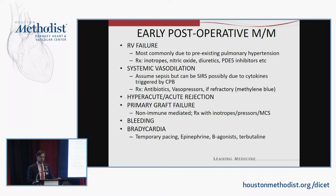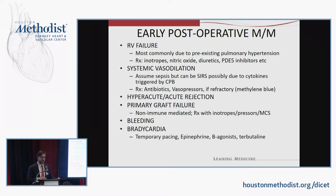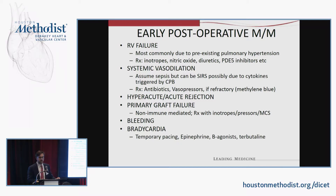Systemic vasodilation can also occur early after transplant. We always assume this is sepsis because patients are immunocompromised and have received heavy steroids, and some institutions use induction therapy. Broad-spectrum antibiotics and supportive care are essential. Cardiopulmonary bypass can also cause a SIRS-like reaction from cytokine response; for those patients, methylene blue can be considered, though it rarely works. Hyperacute and acute rejection are also on the differential. Primary graft failure — which is not immune-related — is treated with mechanical support, often ECMO to rest the heart. Bleeding and bradycardia are also early concerns.